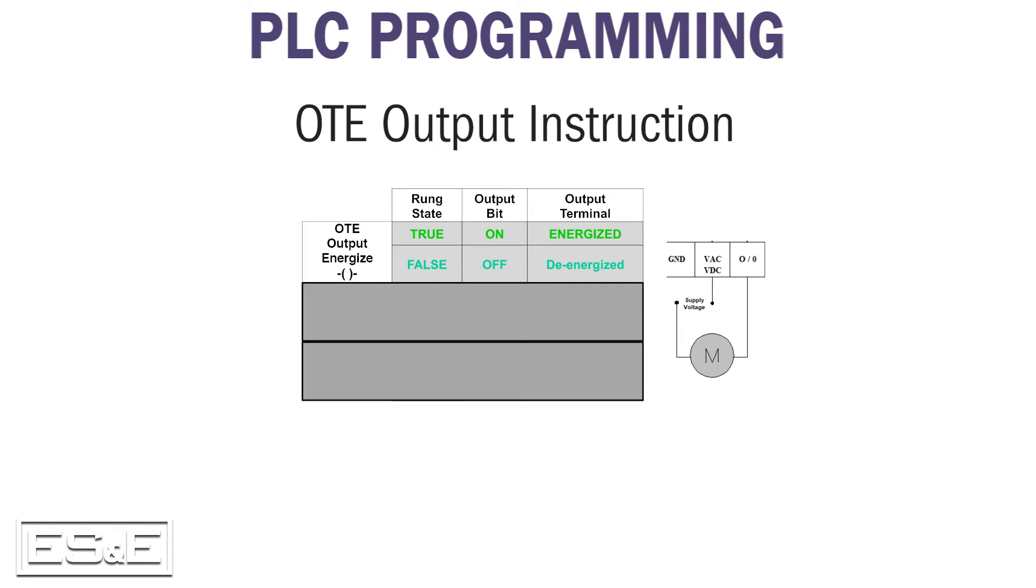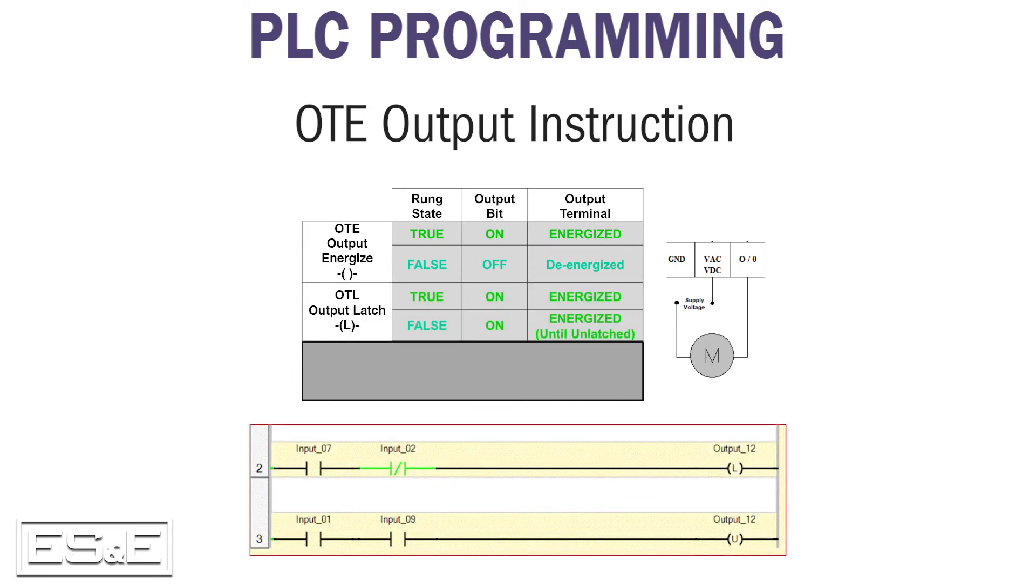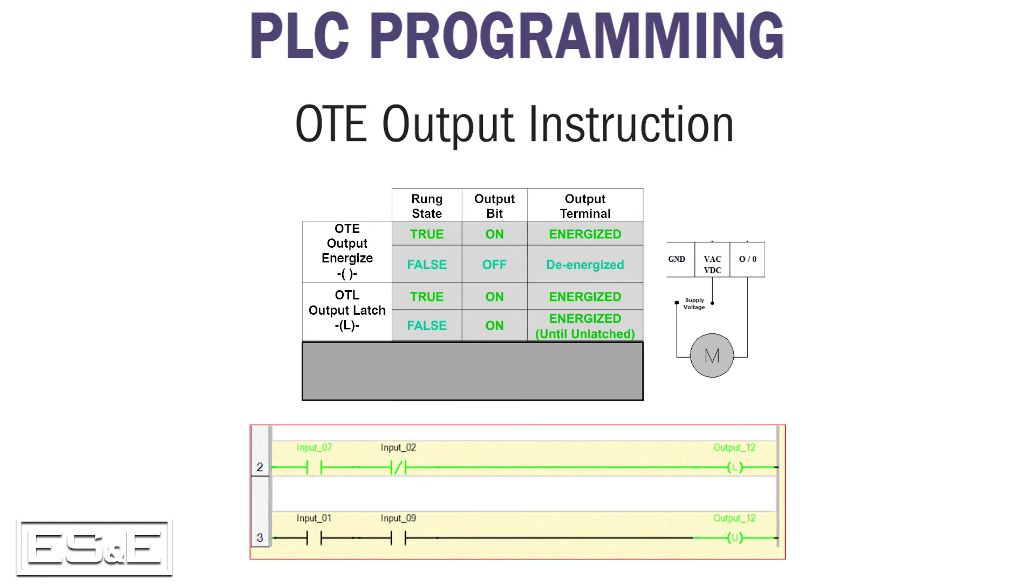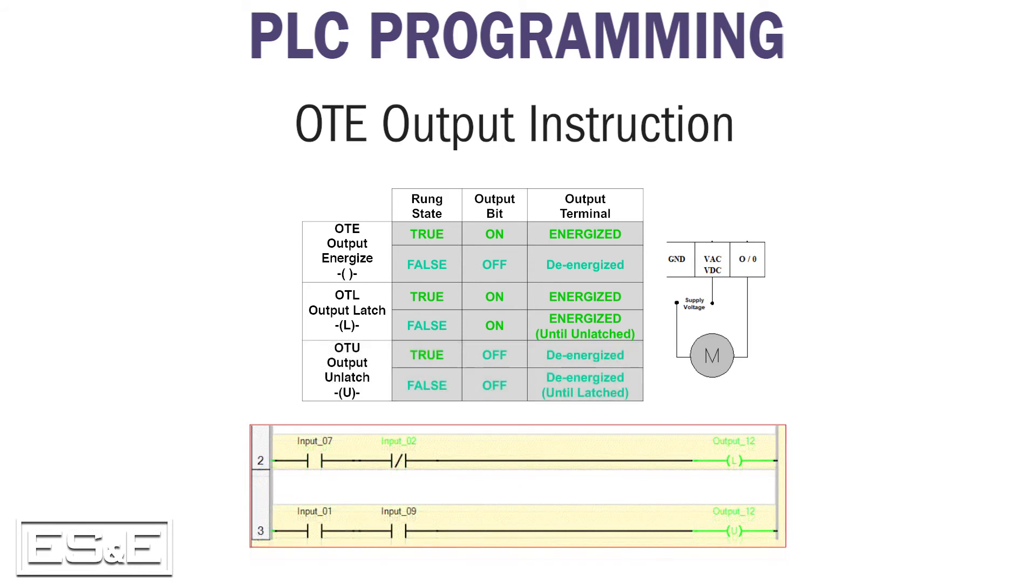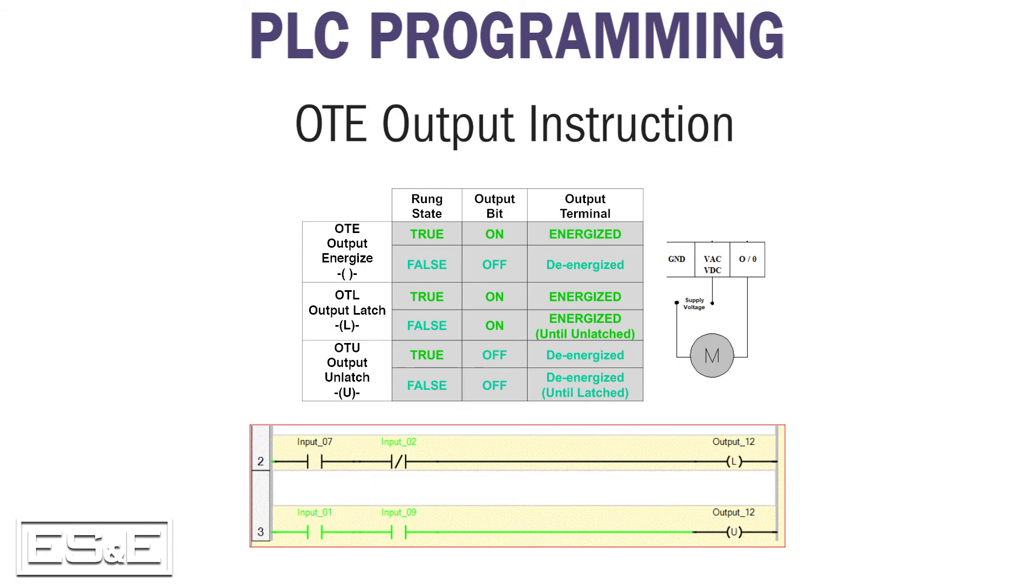There are two other output instructions worth noting. The output latch, or OTL, allows a rung of ladder logic to solve true and turn the output on. In subsequent scans of the logic, the rung can solve false, but the output will continue to stay on. To turn off the OTL, an output unlatch, or OTU instruction is used in a different rung. When that rung solves true, the OTU will turn on and unlatch the original OTL. At that point, the output will turn off.